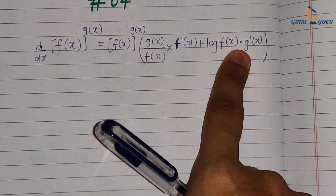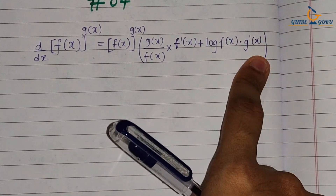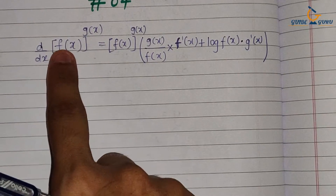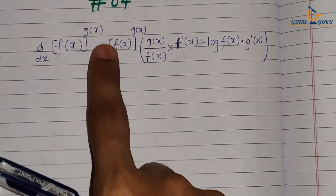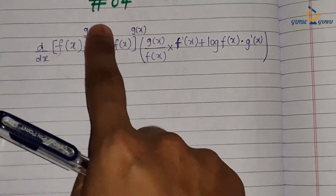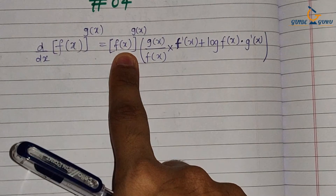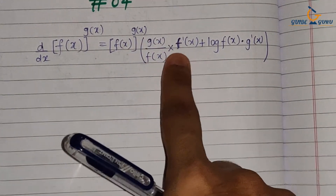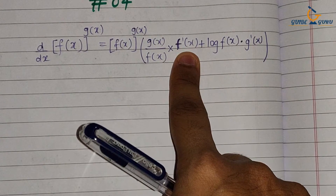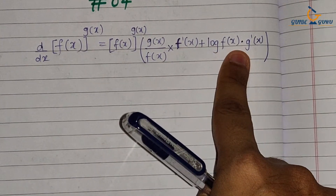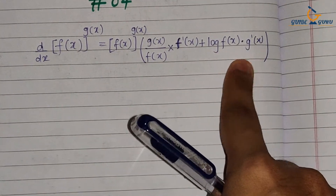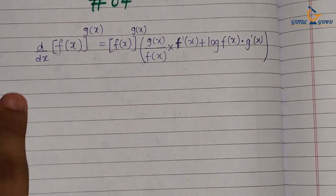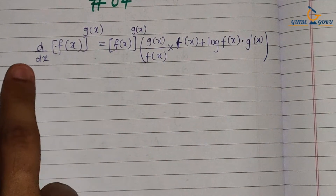of f(x) into derivative of g(x). Once again: if you have a function f(x) raised to g(x), you write the function as it is, then bracket g(x) upon f(x) into derivative of f(x), plus log of f(x) into derivative of g(x). Now we are going to solve some problems based on this kind of function.